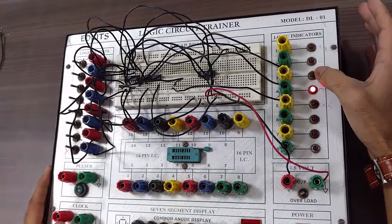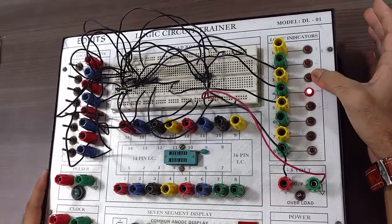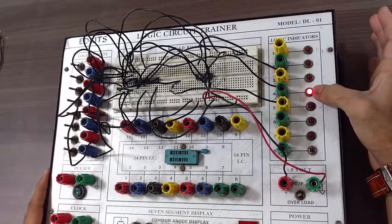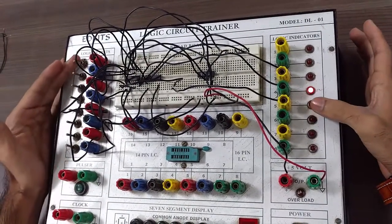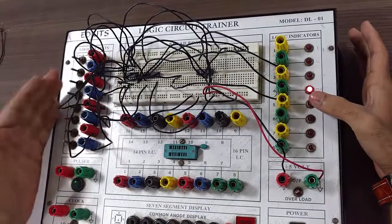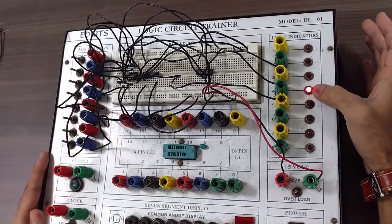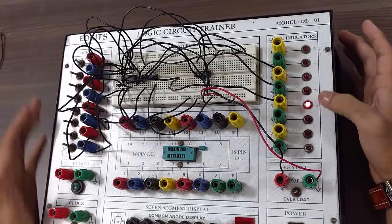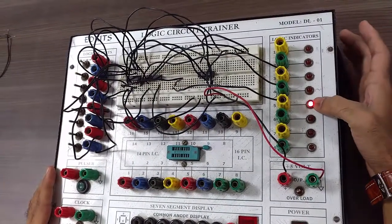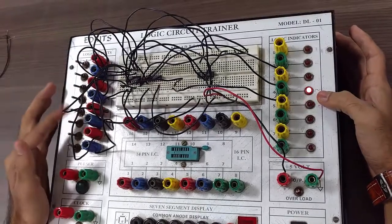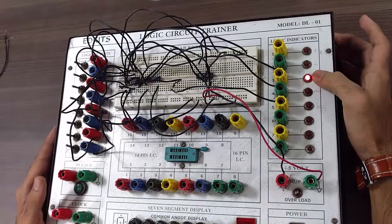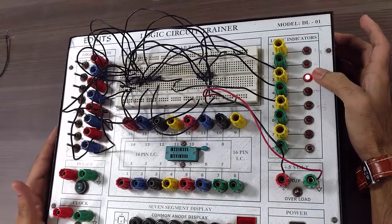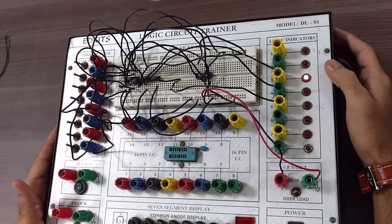And this LED indicator number 3 is for A less than B, this is for A equal to B, and this is A greater than B. As we have applied all the inputs are 0, so A is equal to B and so A equal to B LED is glowing. Let's make A greater than B. Now A is greater than B, so A greater than B LED is glowing. Now B is greater than A, so A is less than B. That is, A is less than B, so LED 3 is glowing. Hence, output is verified.